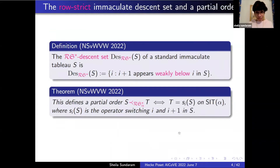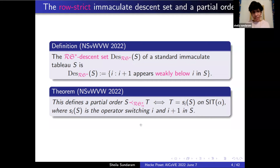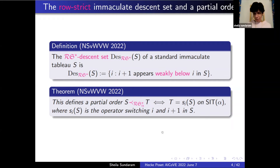Let me give you a quick preview of what's coming. One of the things we have to do was define what I'm calling the RS-star descent set on these standard immaculate tableau. I is a descent if i plus one appears weakly below i. This defines a partial order on the set of standard immaculate tableau, where S precedes T if you can get T just by switching i and i plus one.